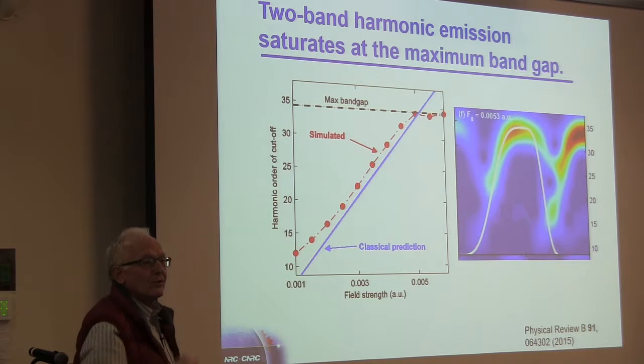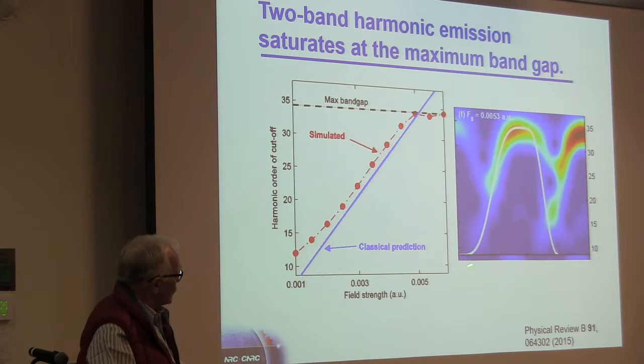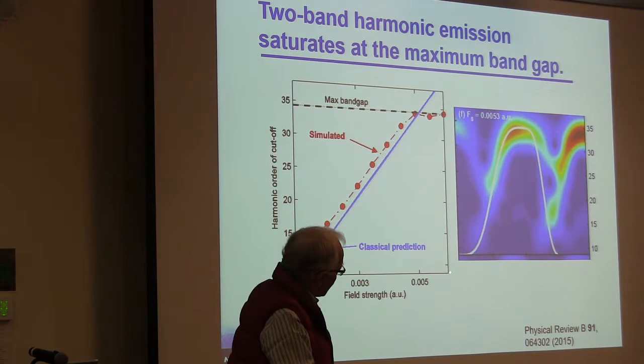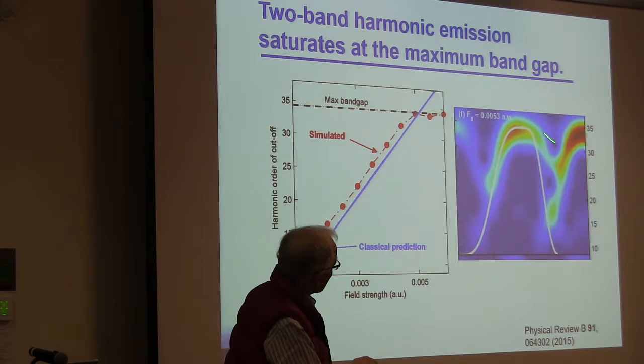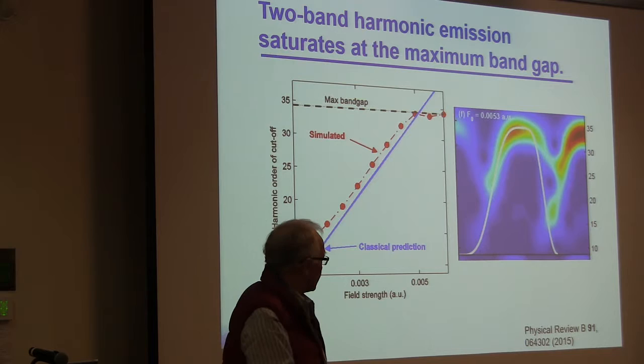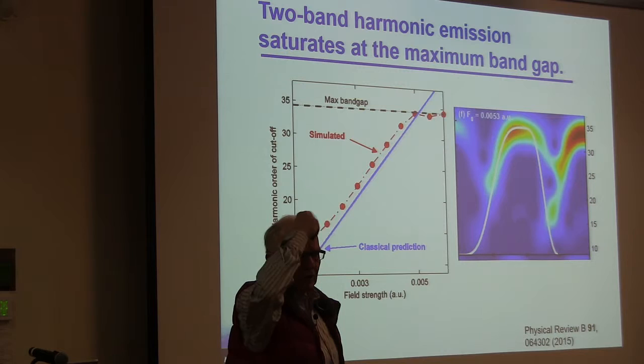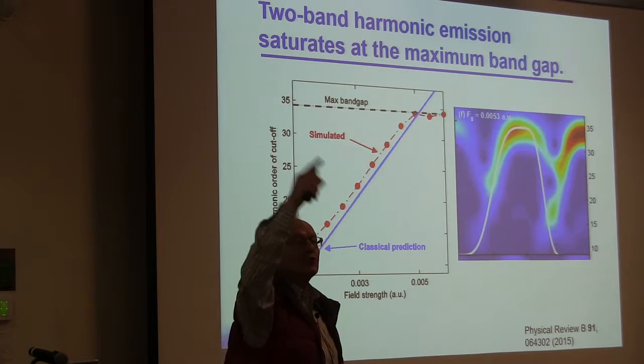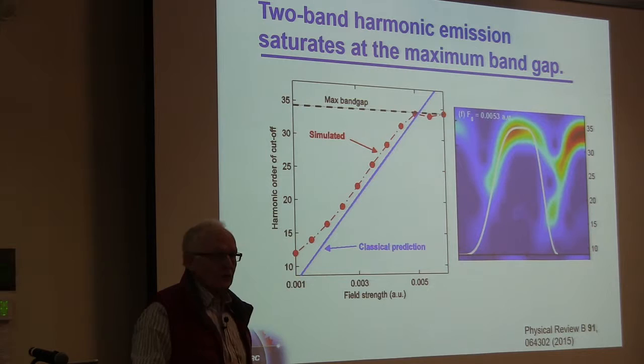The axis of that blue figure: this one is time, there's a half cycle from there to there, of the driving field, which is 3.5 microns in this case. And this is energy going up to the cutoff, and the field strength is up there at the top. All I wanted to show was the trajectory-like or the chirp-like behavior that you know from gas harmonics. So this is coming out of the model.